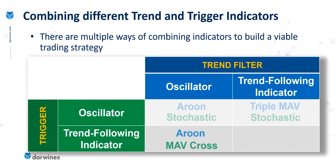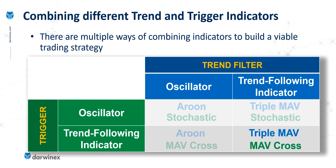Likewise, in another category we might use the Aroon with a trend-following trigger — for example, a moving average crossover. And the final category is one where we use a trend-following indicator for both: a triple moving average for the trend and a dual moving average crossover for the trigger.